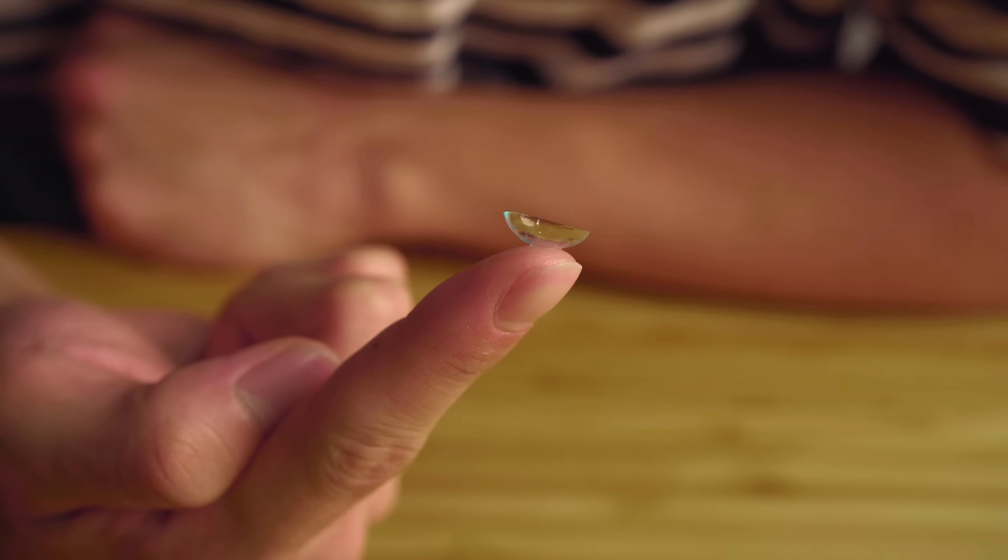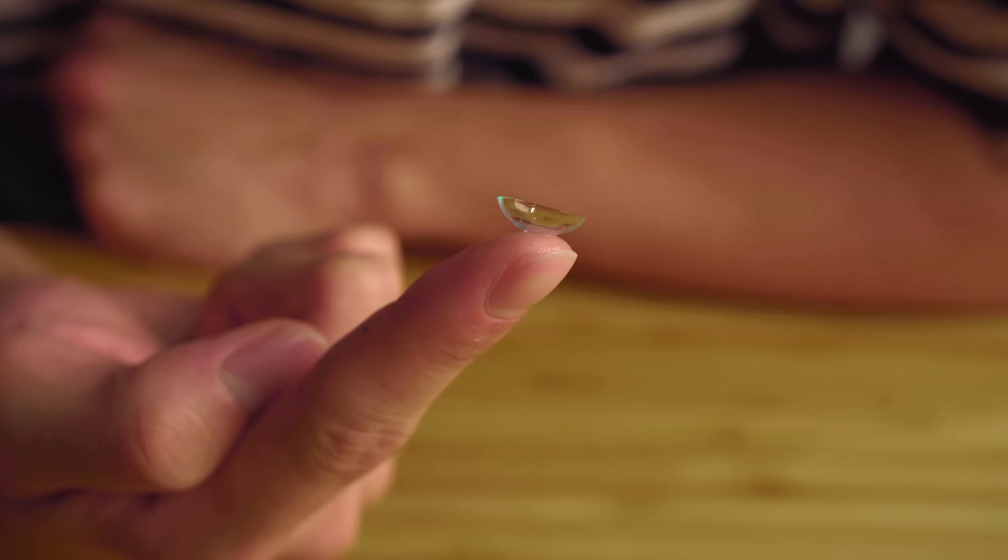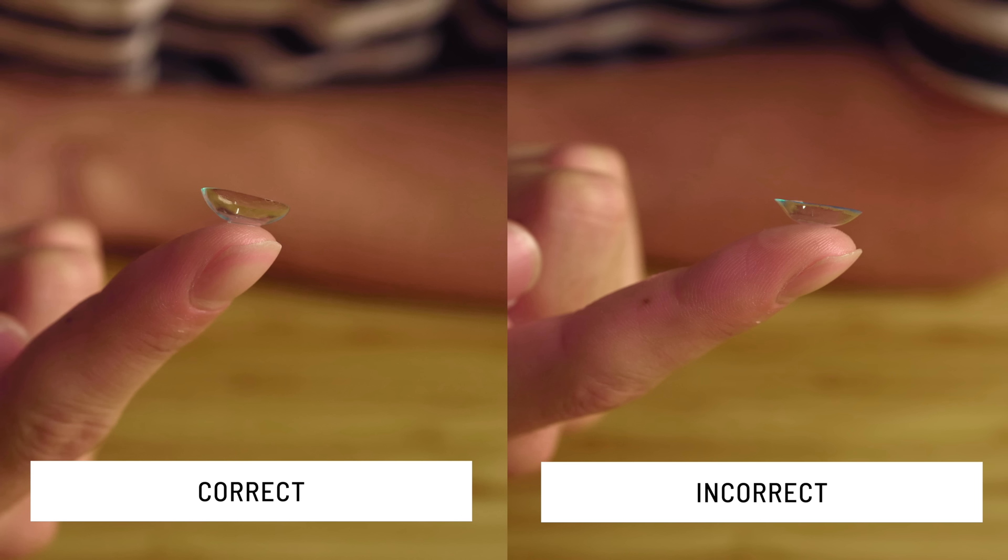Position the lens at eye level and inspect the lens. There are two different ways your contacts can be positioned. The correct way should be for it to resemble a bowl shape where the lens points upwards. The incorrect way would be for it to resemble a taco where the lens either folds inwards or the lens points outwards.